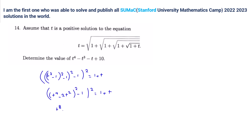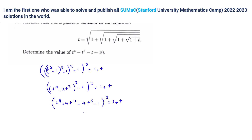Let's check: t to the 8 plus 4t to the 4 minus 4t to the 6 minus 1, whole squared is 1 plus t. Can we simplify this for t squared? Yes, we can simplify. Do you agree we have t⁸ minus 1 and also 4t⁴ minus 4t⁶? Do you agree we can factor these two terms — factor from what?